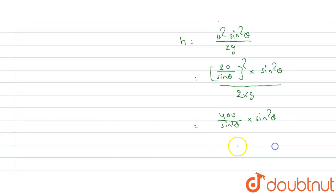So here sin square theta will be cancelled with sin square theta. And we get this is 400 divided by 20. 00 cancelled out and we get the maximum height is 20 meter.